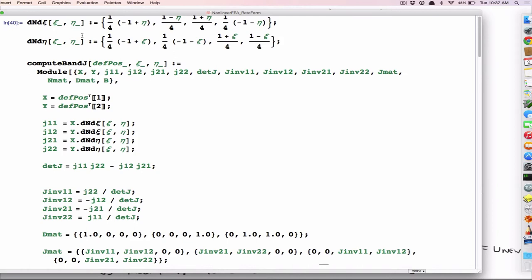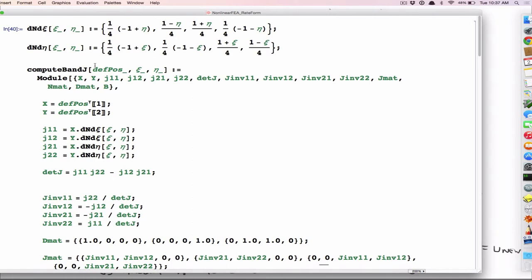So at every converged Newton iterate, I plug in the new locations to update my strain displacement matrix, or update my reference configuration. So I'm not always referring back to the complete perfect square block, but my reference configuration changes at every converged Newton iterate. And that keeps me a little bit safe.